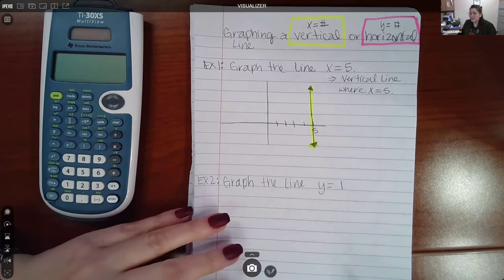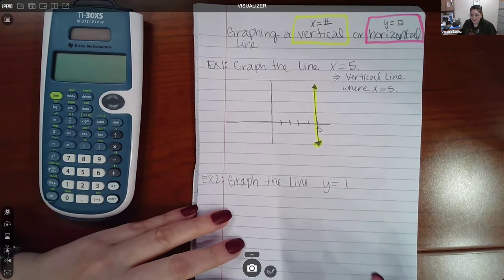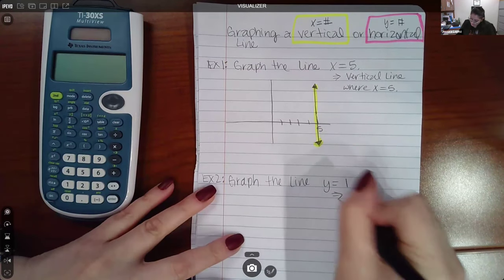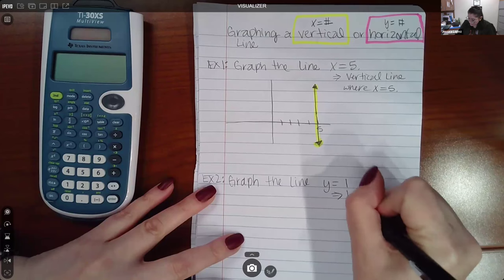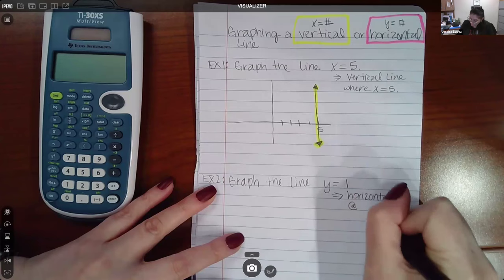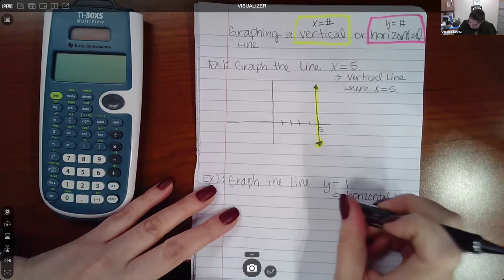Similarly, if you're graphing a line that's in the form Y equals, that is automatically, because it's Y equals a number, it's going to be a horizontal line where Y equals 1.